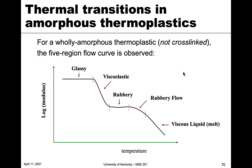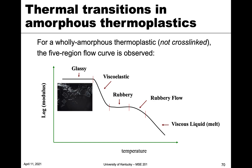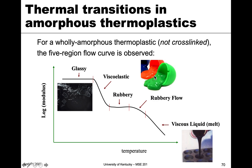Looking at the mechanical properties, specifically modulus versus temperature for an amorphous material: at low temperatures in the glassy region the modulus is quite high. Then at the glass transition temperature we see a decrease in modulus due to viscoelastic behavior. It goes down to a rubbery state, and eventually to a viscous liquid or melt. So above Tg the material becomes less and less usable — we go from glassy to viscoelastic or rubbery flow to a very viscous liquid.